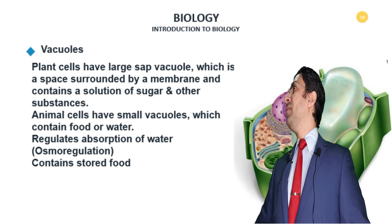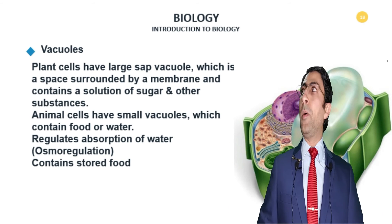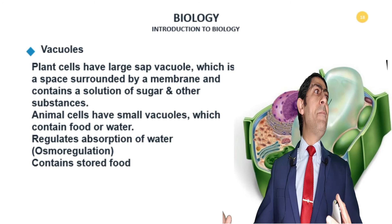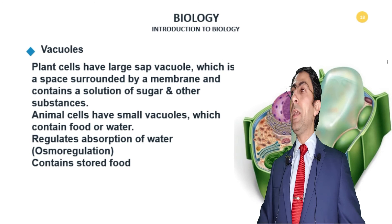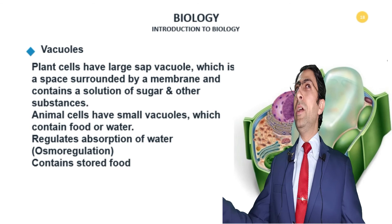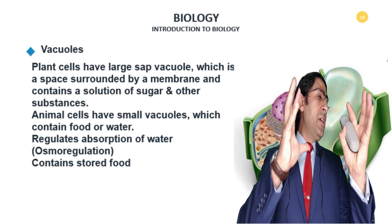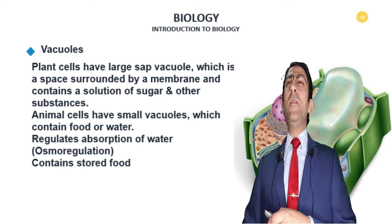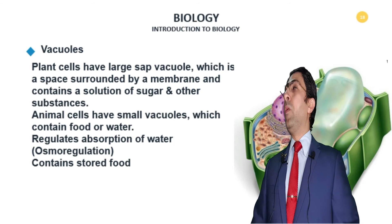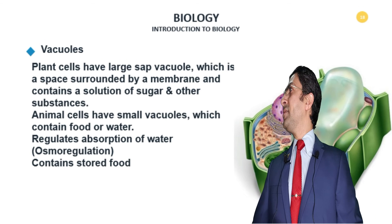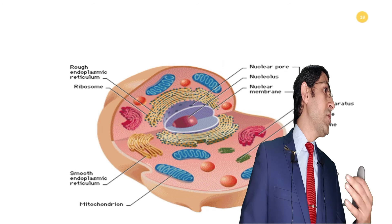Finally, the vacuole. Plant cells have a large central vacuole — a space surrounded by a membrane containing solutions, sugar, and many other substances. It is very large in the plant cell and positioned in the center. Animal cells have very small vacuoles which contain food and water. The vacuole regulates absorption of water, which is known as osmoregulation, and may contain stored food.